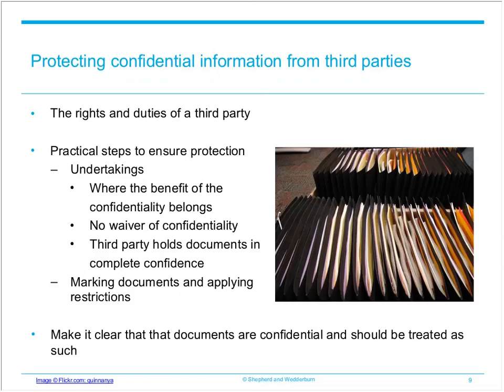In the event that confidential information is to be passed to a third party, practical measures should be put in place to help ensure the confidential information does not make it any further than the third party to whom it is sent. Before making any disclosure, the disclosing party can require the receiving party to sign an undertaking that will often contain a number of terms, including: that the documents are confidential and the benefit of that confidentiality belongs to the disclosing party; that the provision of the document to the recipient does not amount to any waiver of the confidentiality; and that the documents are to be held by the third party in complete confidence and are not to be disclosed to any person without the disclosing party's consent, apart from as required by law or regulation.